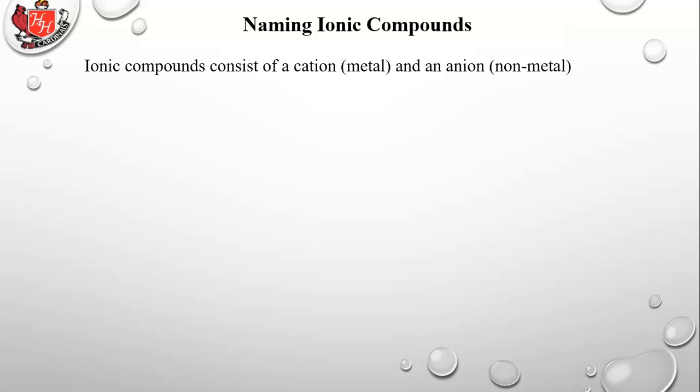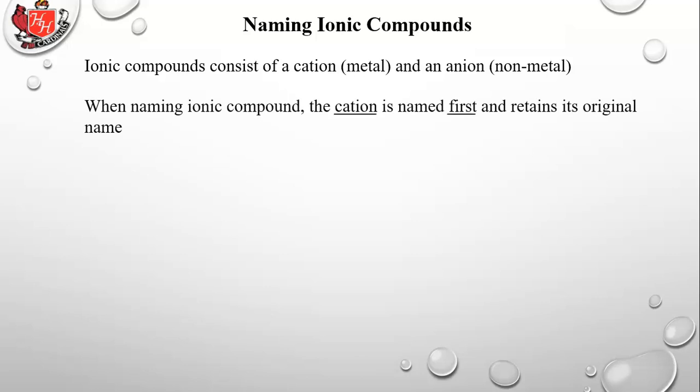Ionic compounds consist of a cation, a metal, and an anion, a non-metal. When naming ionic compounds, the cation is named first and retains its original name. The anion is named last, and the end of the anion's name is changed to IDE.